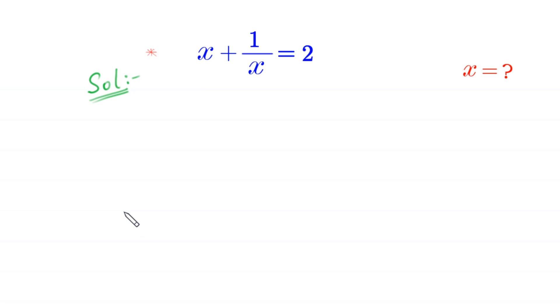Hello, welcome to how to solve this very nice algebra equation. x plus 1 over x is equal to 2. We need to find all possible values of x.